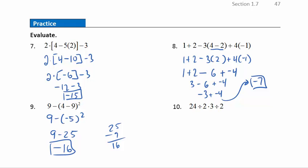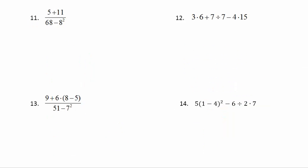Question ten: only multiplication and division, so they tie and we work left to right. First, 24 divided by 2 is 12. Then 3 times 12 is 36. Finally, 36 divided by 2 is 18. Go ahead and pause the video again, then hit play for the answers.